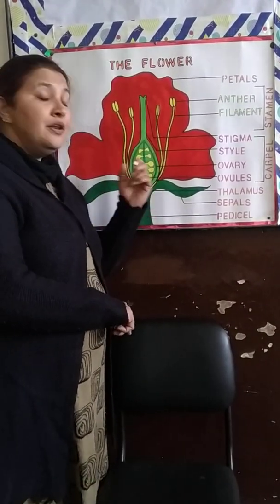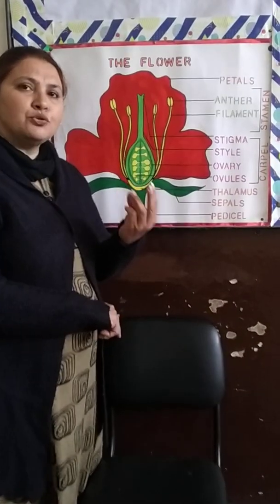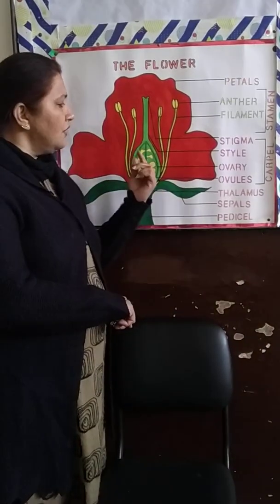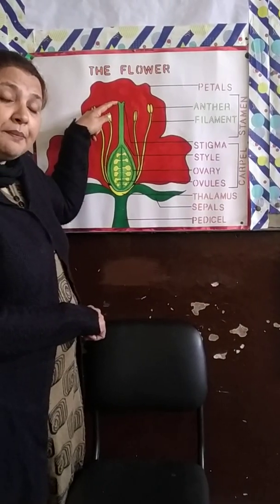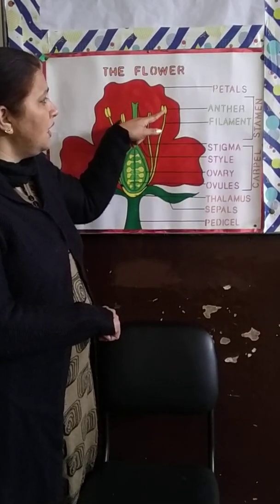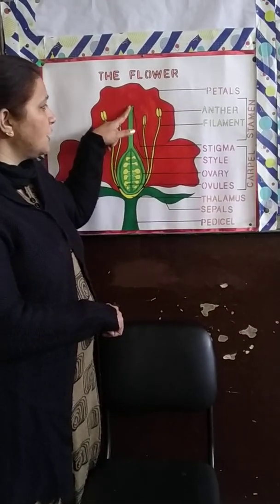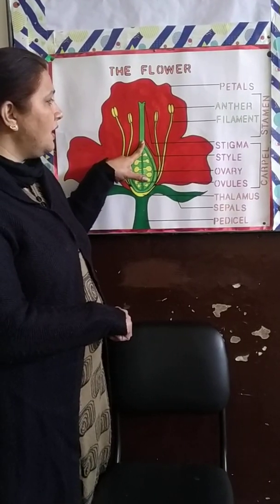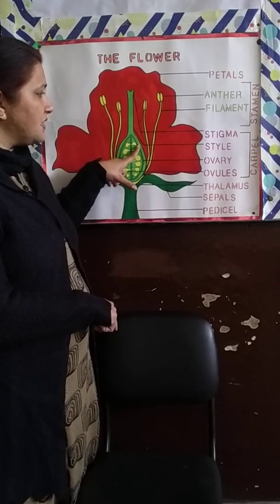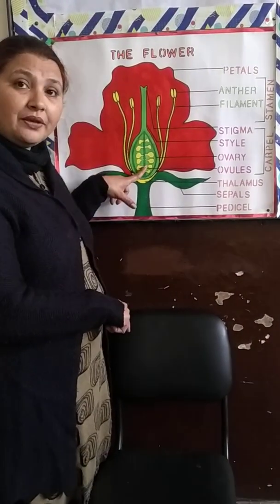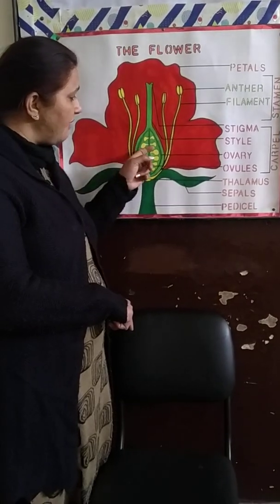The fourth whorl of the flower — the innermost whorl — is the gynoecium, and the gynoecium is made up of carpels. There may be one carpel, two or three carpels in the flower. The carpel is made up of how many parts: the topmost sticky part is called the stigma, where all the pollen grains from the anther come and stick. Then this part is called the style, from where the pollen tube travels. And then this is the ovary. The ovary contains ovules — the ovary will be the future fruit and ovules will be the future seeds.